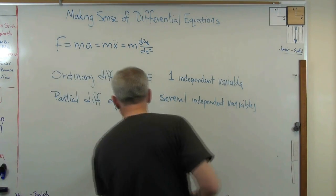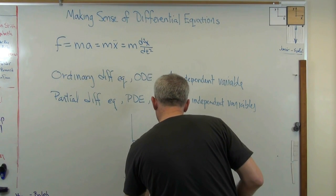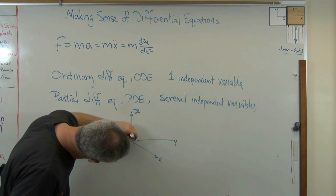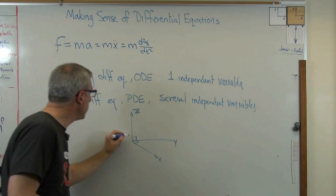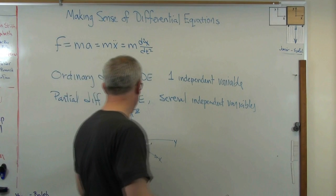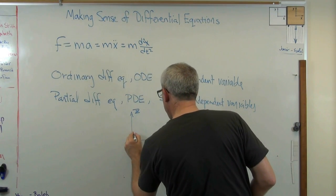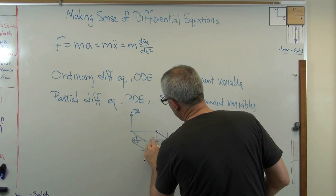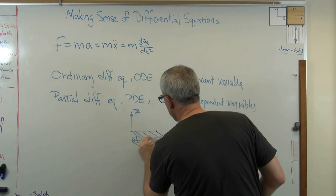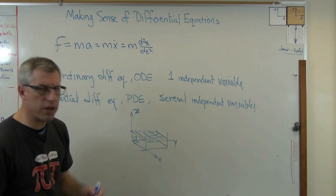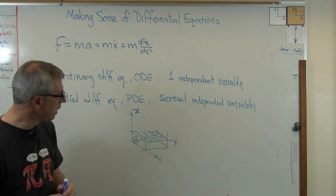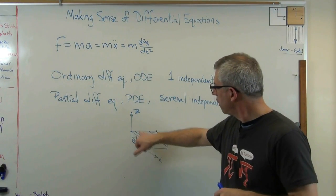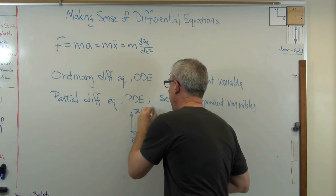A function can have more than one independent variable. Imagine a set of axes where you have x, y, and z — three orthogonal axes. Imagine I have a surface, and I've got some function that lies along that surface. If I know what x and y are, I know what z is. That gives me a function where z is a function of x and y.